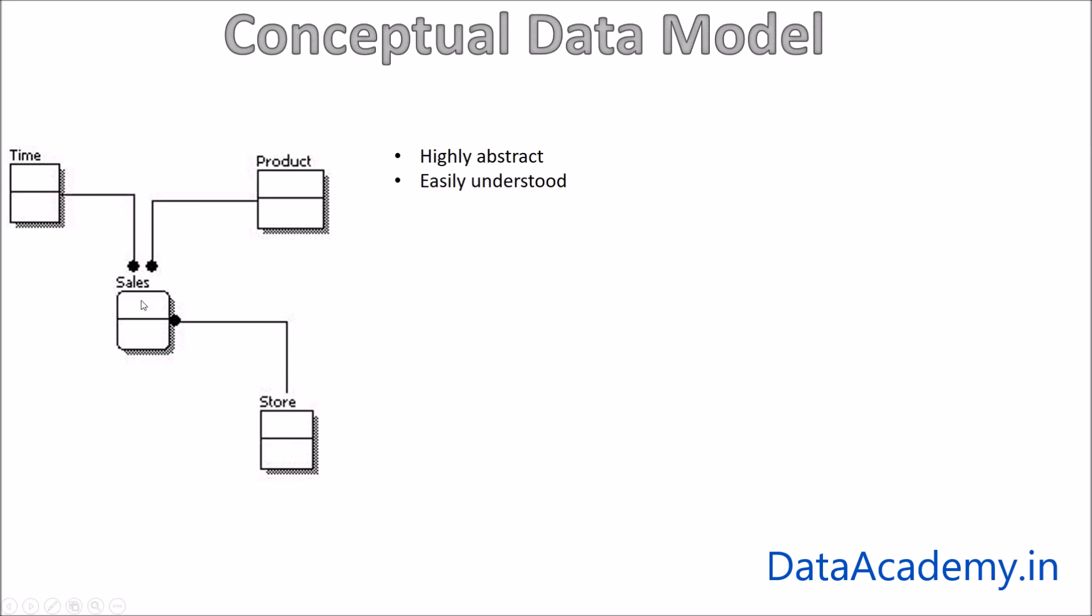time, product, sales and store. And all of the three entities which is time, product and store have a direct relationship with the sales entity. So that way there is a lot of information that can be easily obtained by looking at the conceptual data model.